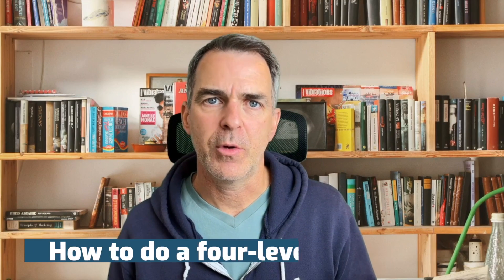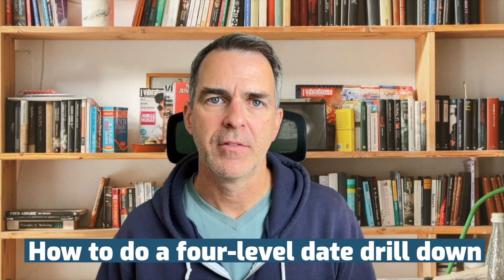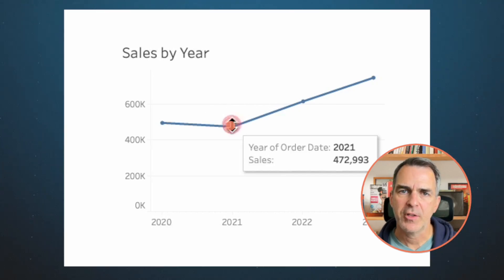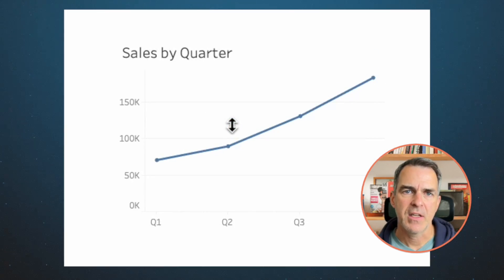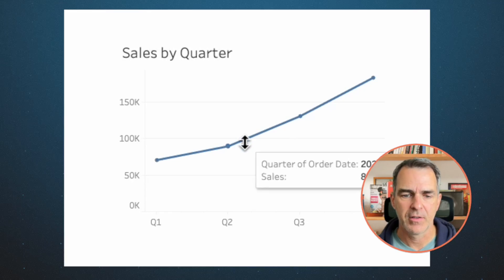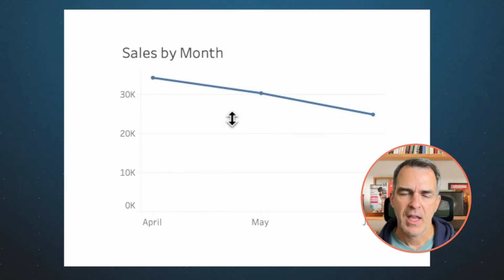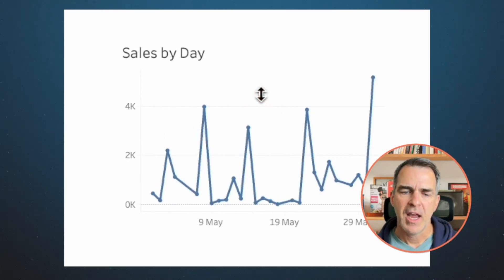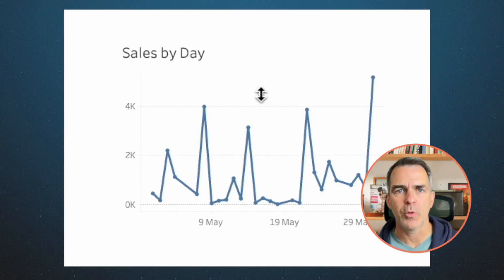In this video, I'm going to show you how to do a four-level date drill down. We're going to start with sales by year, click on a year, and it drills down to the sales for each quarter within that year. Click on a quarter, and now it shows us the sales by month within that quarter. Click on a month, and we can see the sales by day within that year, quarter, and month. Here's how you do it.